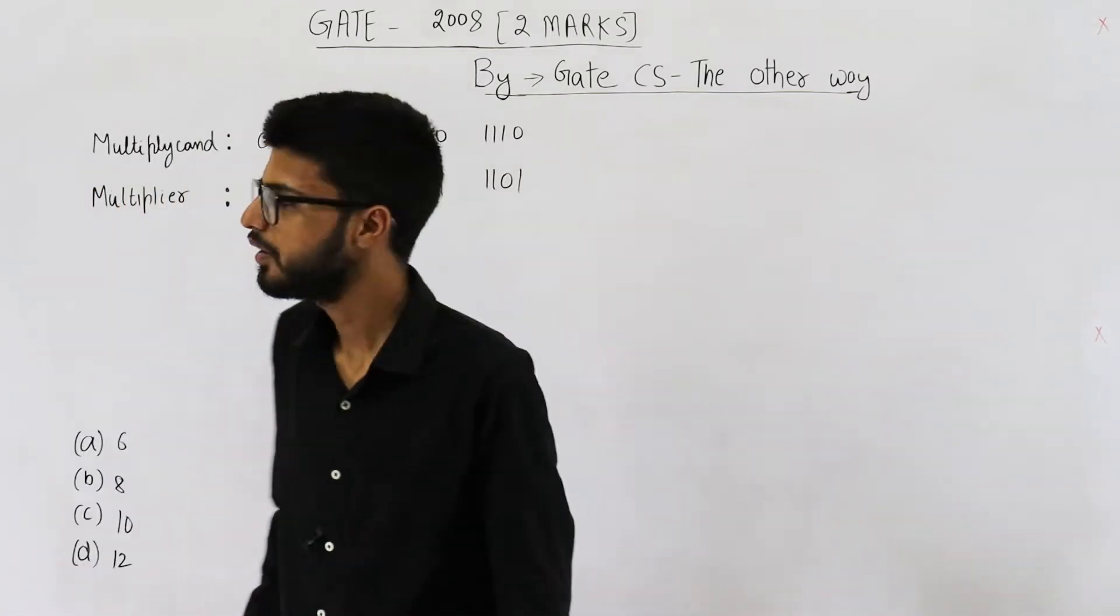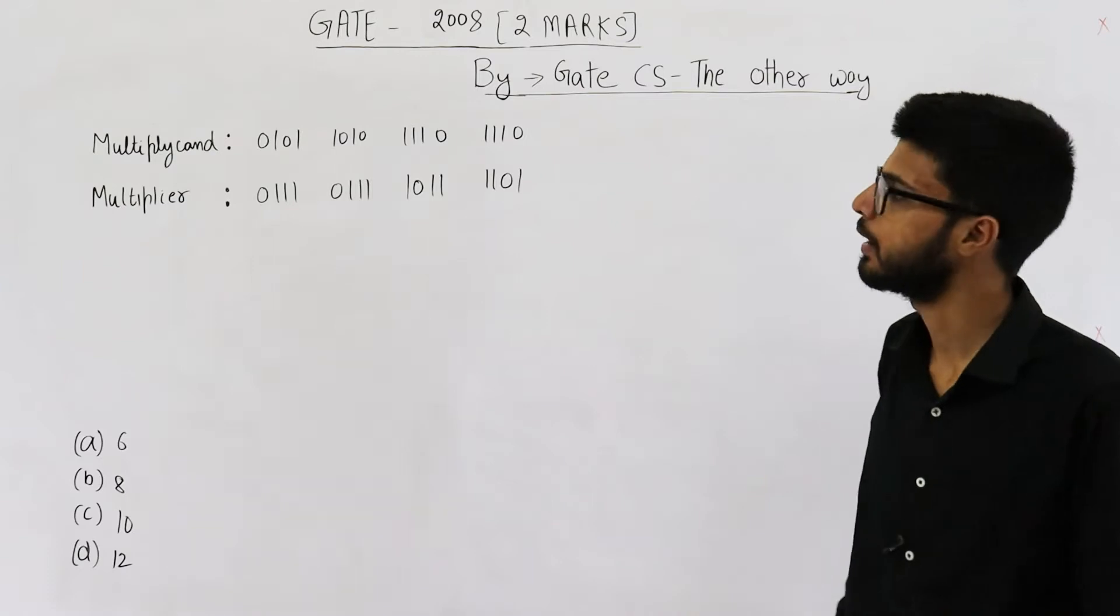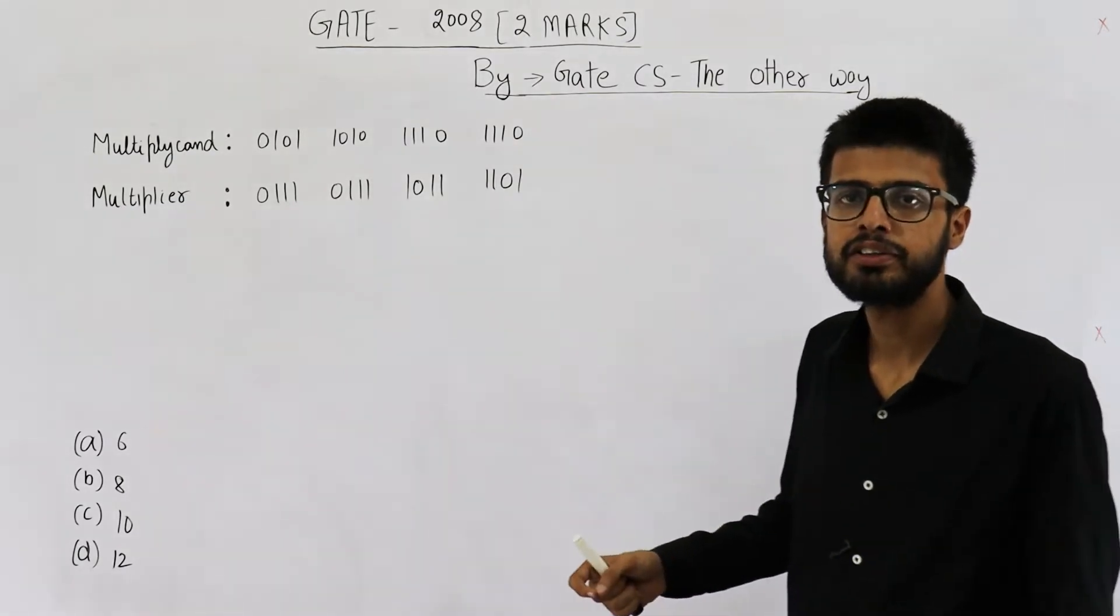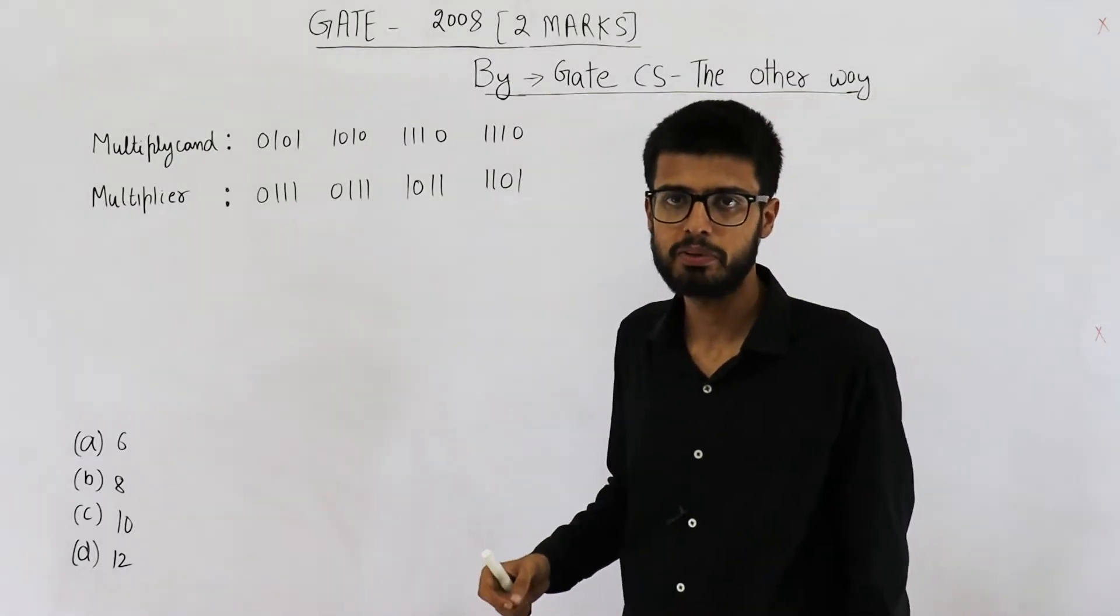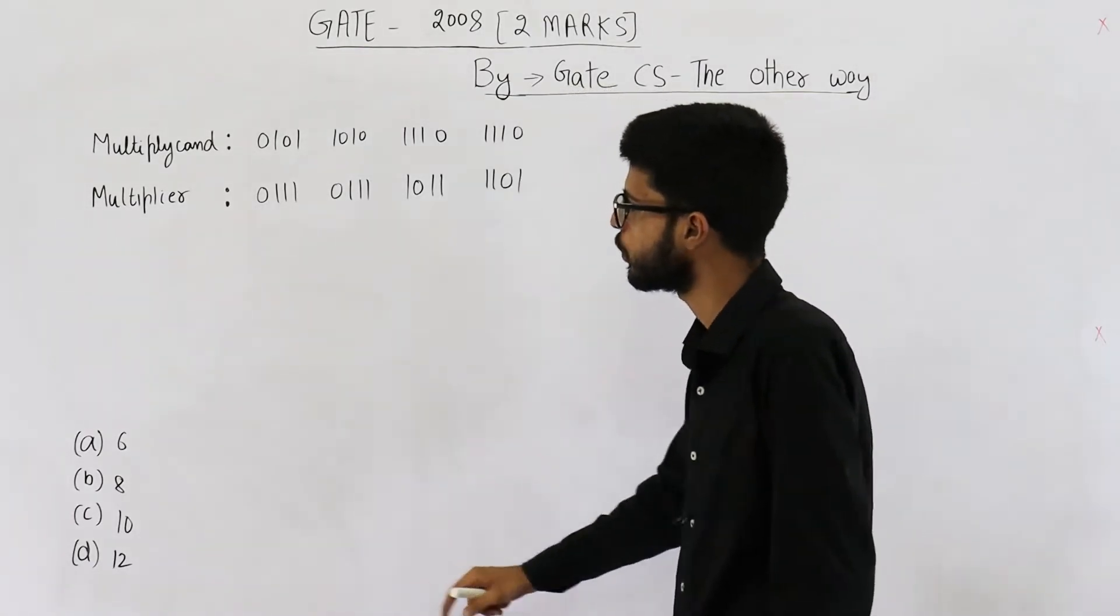It's for two marks. They're saying if we multiply both of these numbers using Booth's algorithm, how many additions and subtractions will be done? They're asking total number of additions plus subtractions. You have these four options.